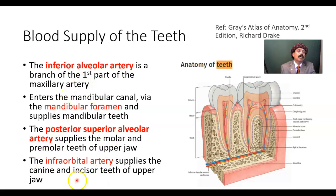Both the upper jaw and lower jaw are getting blood supply from the branches of the maxillary artery. The upper jaw, or maxillary teeth, are getting blood supply from the third part of the maxillary artery. The lower jaw teeth, or mandibular teeth, are getting blood supply from the first part of the maxillary artery.